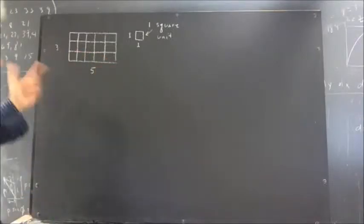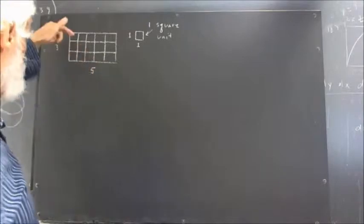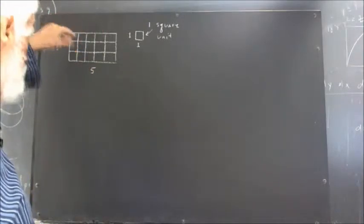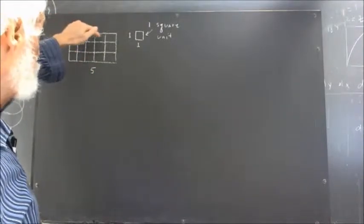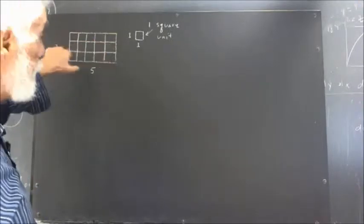Then we would have how many square units? If all these are equal, if I divided it really evenly, we'd have 1, 2, 3, 4, 5 by 1, 2, 3, 4, 5.